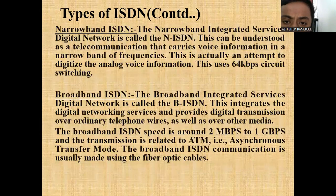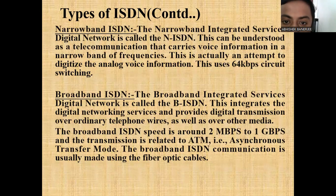Narrowband ISDN, that is Narrowband Integrated Service Digital Network, can be understood as a telecommunication that carries voice information in narrowband frequencies. This is actually an attempt to digitize the analog voice information, and it uses 64 kilobits per second circuit switching.